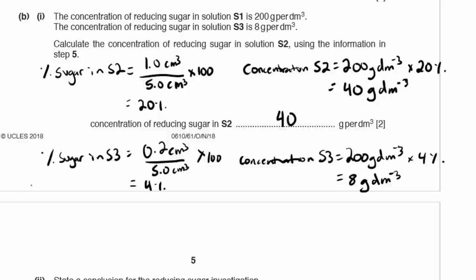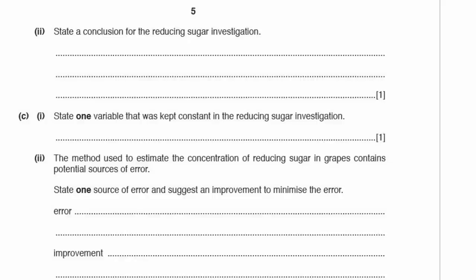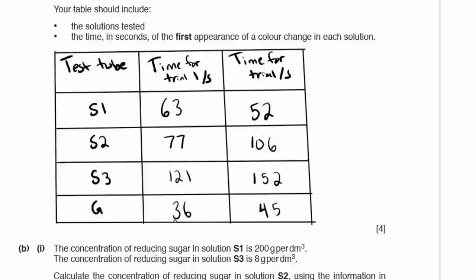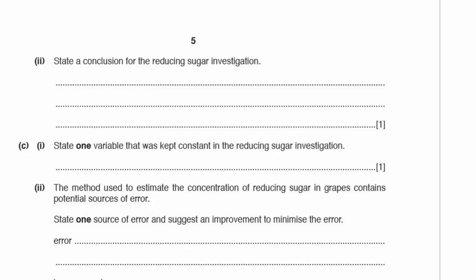State a conclusion for the reducing sugar investigation. Looking at the results, the time for the first color change for grapes was significantly less in both trials than for any other solution, meaning there was more reducing sugar in the grapes than in S1, S2, or S3. So: grapes contain more reducing sugars than S1, S2, and S3, as less time was taken to change color.